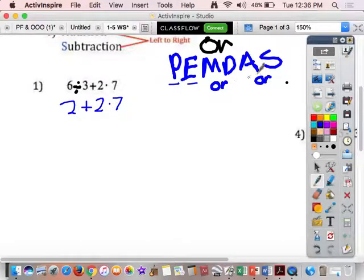Alright, now I've got to ask, do I have any more multiplication or division? Yes, I do. 2 times 7 is 14. 2 plus 14. Okay, so we have 14 plus 2 is 16. There we go. That one's done.